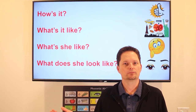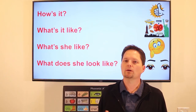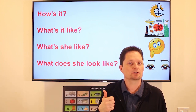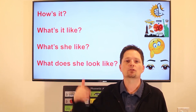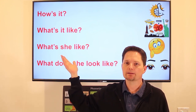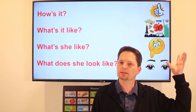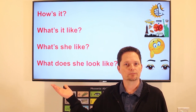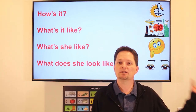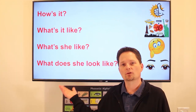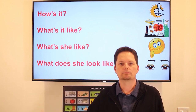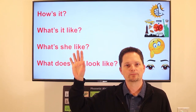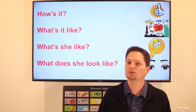Let's review. 'How is it?' is only a question for condition — it's good or it's bad. For more information, use 'What's it like?' For a person: 'What's she like?' She's very friendly. And for looks only: 'What does she look like?' She has big eyes. Thank you for watching. If you want to learn more expressions and how to use them correctly, subscribe to our channel and keep watching. See you next time!